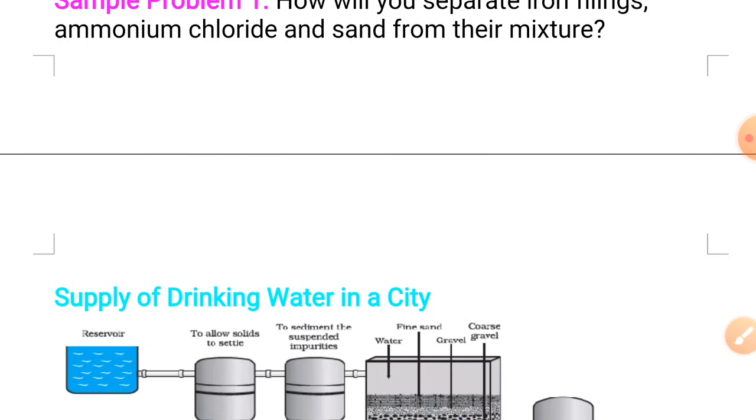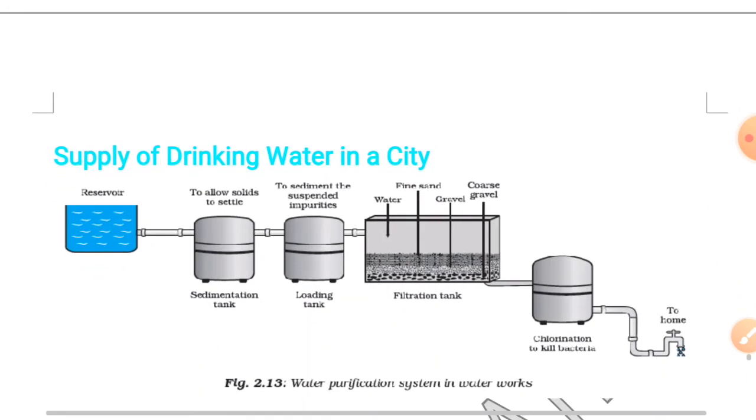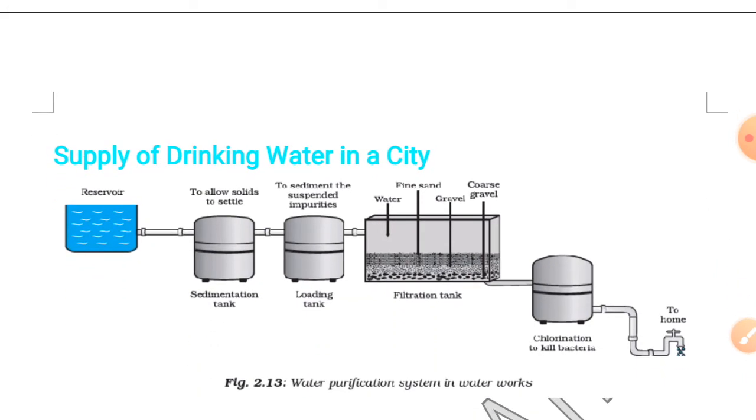Let's move to the next topic. We will understand the supply of drinking water in a city. In any city, the water can be collected from a river, lake, or pond. There will be a reservoir from which water will be collected to sedimentation tank. In sedimentation tank, the impurities present in water which are heavier than water get settled. They settle down and the water moves to the next loading tank.